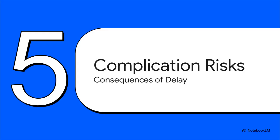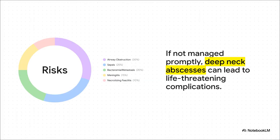The reason we take all of these measures so incredibly seriously is because the alternative is dire. Let's look at the cascade of terrible things that can happen if these abscesses aren't managed swiftly and correctly. The most immediate, life-threatening danger is airway obstruction — the abscess literally swells up and chokes off the patient's ability to breathe. Sepsis is right behind it, where the body's response to the infection spirals out of control. The bacteria can also spill into the bloodstream, causing things like meningitis. And in the worst-case scenario, this can devolve into necrotizing fasciitis — a flesh-eating infection that progresses with terrifying speed and is often fatal.